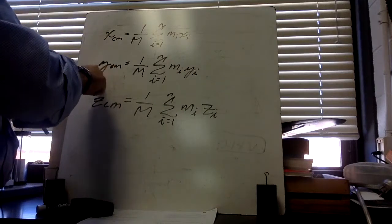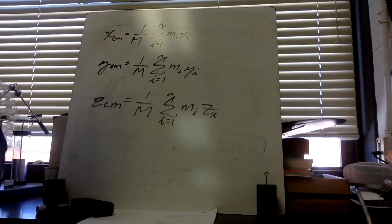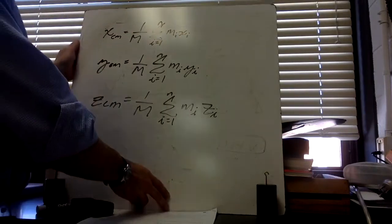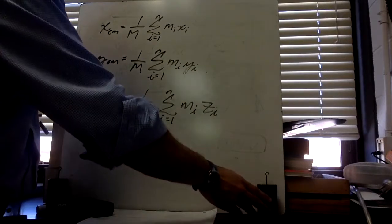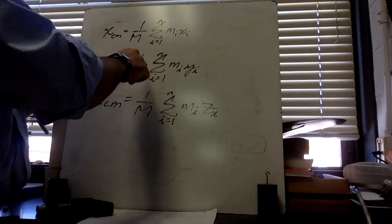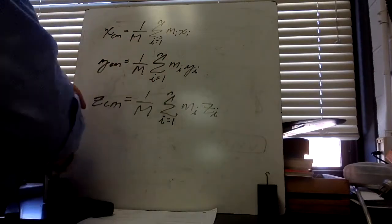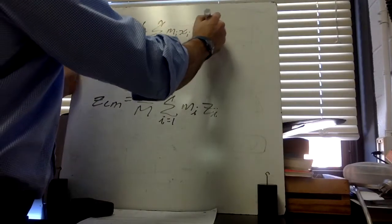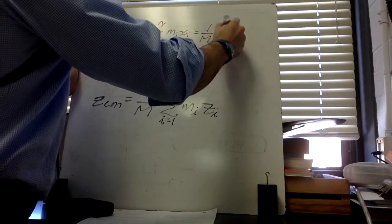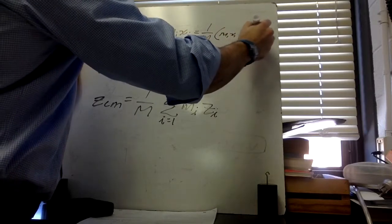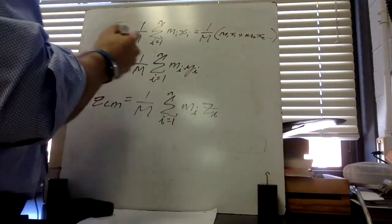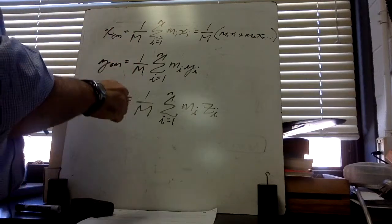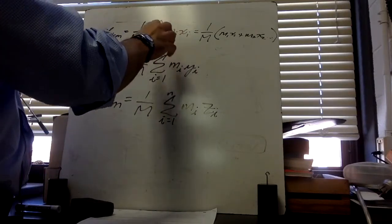y_cm is the y-coordinate, and z_cm is the z-coordinate of the center of mass. We calculate it by taking one divided by capital M — capital M is the total mass of the object — and multiplying by a series of products: a piece of mass times the coordinate of that piece of mass. It looks like: m₁x₁ + m₂x₂, and so on — that's what the summation symbol represents.